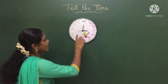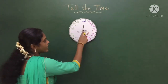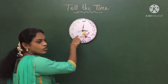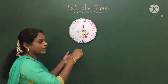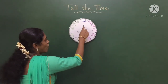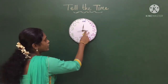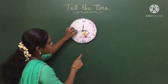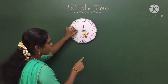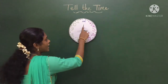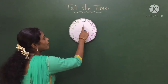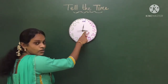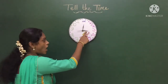Now see here in this clock — can you see these are the hands of the clock? Here three hands are there. See, one, two, three. This hand shows the seconds, and this hand shows the minutes, and this hand shows the hours.